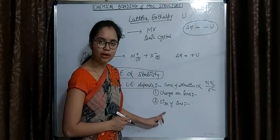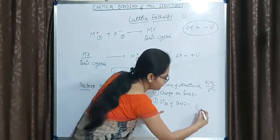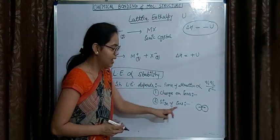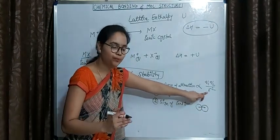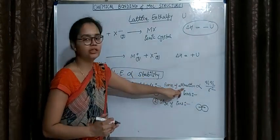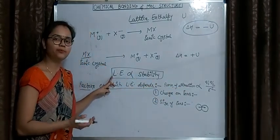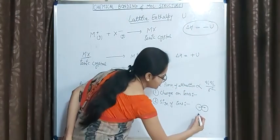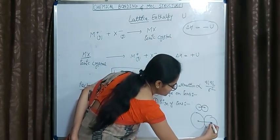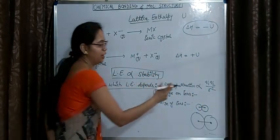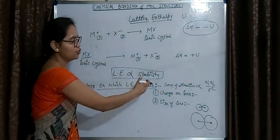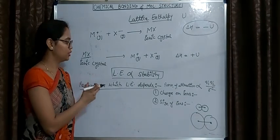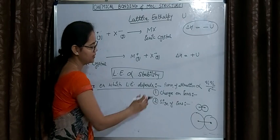The second factor is size of ions. If we use smaller ions, the inter-nuclear distance R will be lower. A lower R means greater force of attraction, and greater force of attraction means greater lattice enthalpy. Conversely, if larger ions are used, the inter-nuclear distance will be larger, force of attraction will be lower, and ultimately lattice enthalpy will also be lower. These are the two factors on which lattice enthalpy depends.